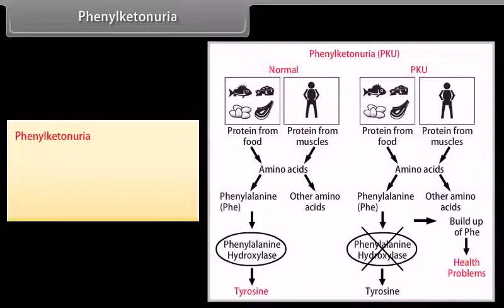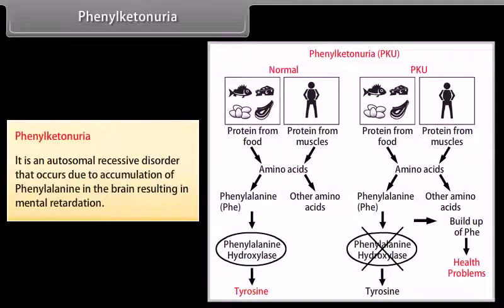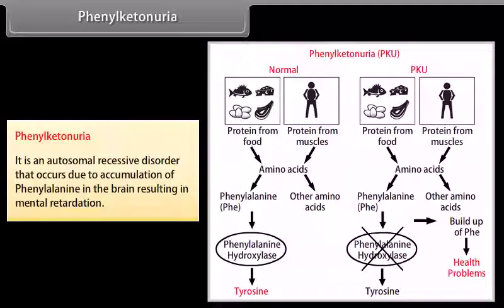Phenylketonuria is an autosomal recessive disorder that occurs due to accumulation of phenylalanine in the brain, resulting in mental retardation.